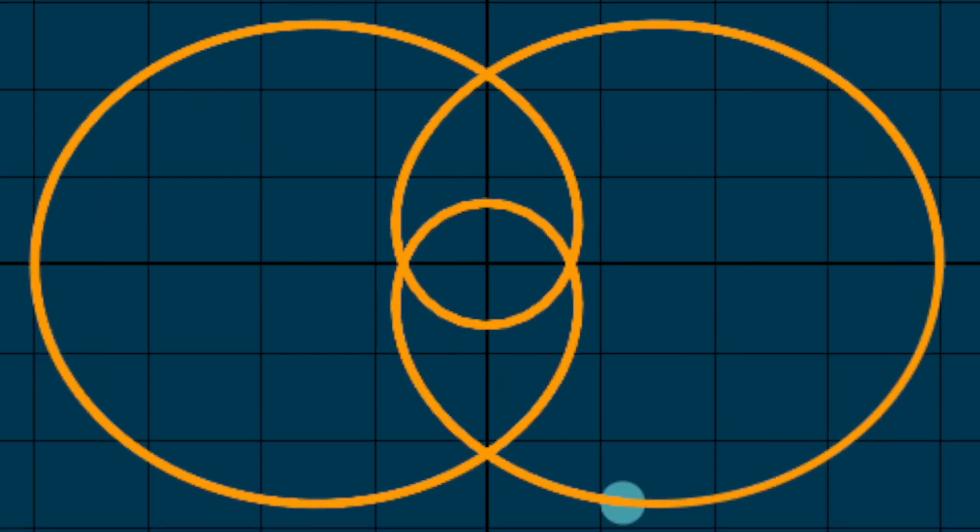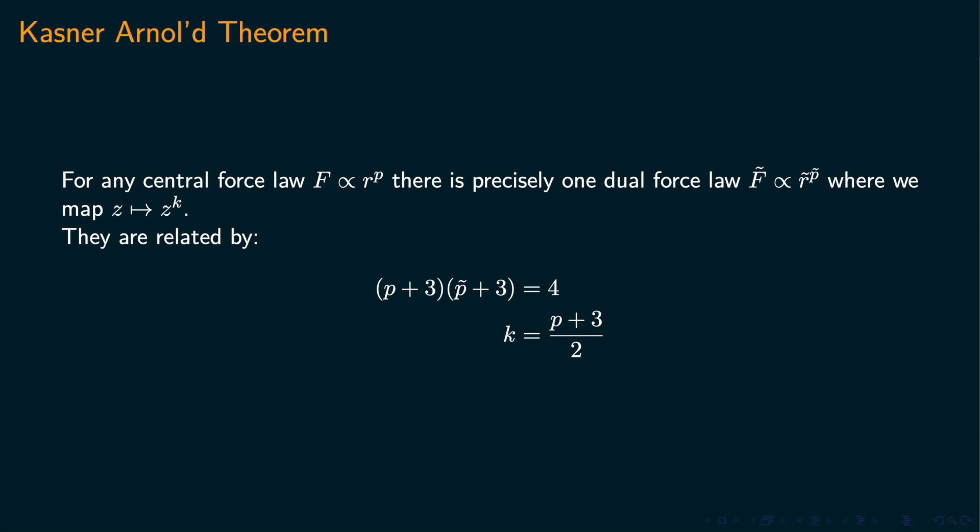This is summarized by the beautiful Kastner-Arnold theorem. Given a central force field where force is proportional to a power of r, there is precisely one dual force field where we can map between the two orbits by taking an appropriate power in the complex plane. They are related by the equations here.